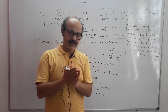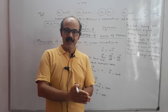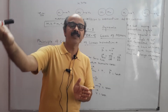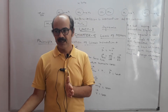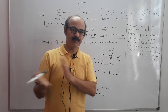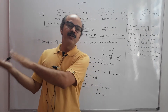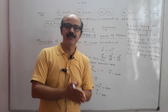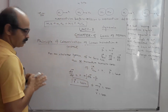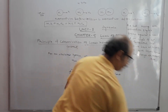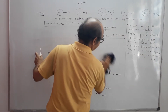Momentum before firing equals momentum after firing. If a jump occurs, momentum before jumping equals momentum after jumping. In a football or hockey game, if two players entangle, momentum before entangling is equal to momentum after entangling. This is how we apply the momentum conservation principle.